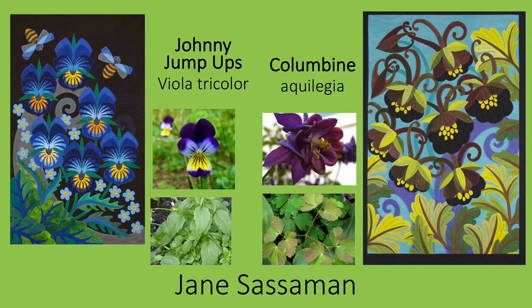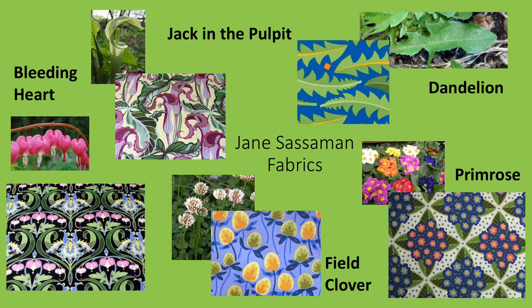Here are several more of Sassaman's quilts. Just as in her earlier iris quilt she made the beard a focal point, she draws one's eye immediately to the dramatically veined petals in her Johnny Jump Ups. In the Columbine quilt, she has turned the curving spurs or modified petals of the flower into dramatic spirals and captured the brilliant contrasting yellow of the anthers. I mentioned earlier that Sassaman also designs fabrics — here are fabrics she has designed based on the bleeding heart, the jack in the pulpit, the dandelion leaf, the primrose, and field clover. Each is a fascinating treatment of the particular plant.